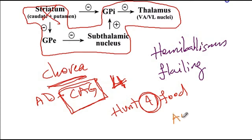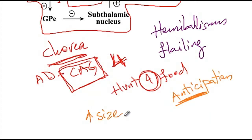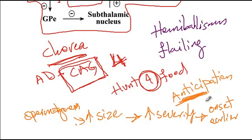Another important feature of Huntington's disease is anticipation — children of male patients with Huntington's disease are more likely to develop the disease at an earlier age. The reason is that during spermatogenesis, CAG repeats tend to increase in size; as the repeats become longer, disease severity increases and age of onset is earlier. For example, a father may have had chorea symptoms at age 60, while his child develops symptoms at around age 45 or 50.